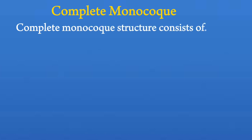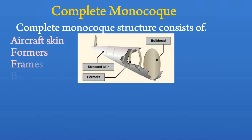Complete monocoque. A complete monocoque structure consists of aircraft skin, formers, frames, and bulkheads.